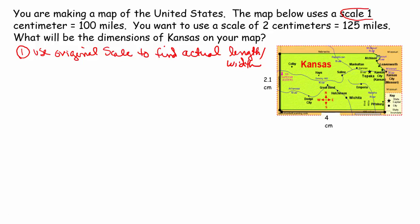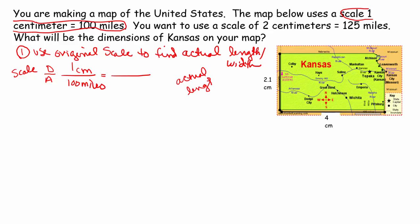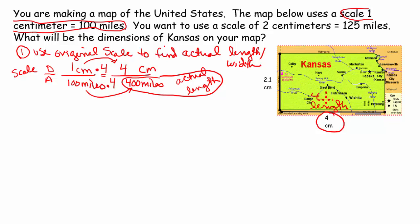We're going to use our original scale: 1 centimeter equals 100 miles. Drawing over actual — I'll find the actual length first. I look on my map and the length is 4 centimeters. I put my 4 on top. How do I get from 1 to 4? I multiply 1 by 4, so I also multiply 100 by 4: 100 times 4 is 400 miles. The actual length of Kansas is 400 miles.